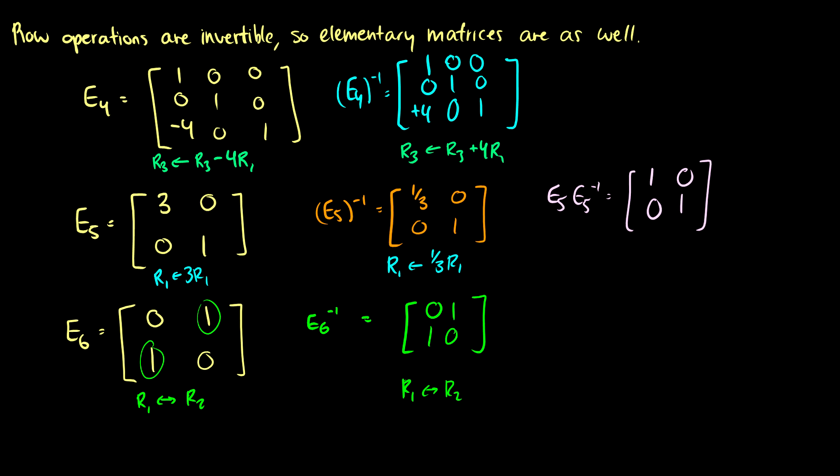So these three operations are the only three operations we can do, and we've shown with specific cases that these work. With more general cases, for instance, I could change this negative 4 to a negative C, and then in the result we get a C there. Similarly in E5 we could do C and then 1 over C. And with row switching, we could pick any two rows. So these generalize very easily. Each elementary matrix does only one operation; we will never have an elementary matrix that does more than one operation.